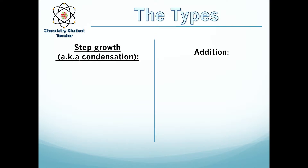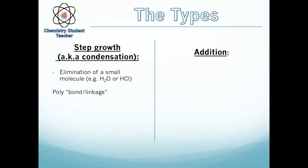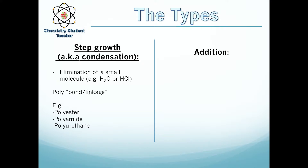Condensation, known more commonly as step growth, is called condensation polymerization because there is elimination of a small molecule, such as water — hence condensation — or HCl. Any other small molecule can also come off. They are named poly- and then the bond or linkage that connects those different monomers. For example, we have polyester, so a polymer with ester bonds; polyamide, a polymer with amide bonds; and polyurethane. There are loads out there.